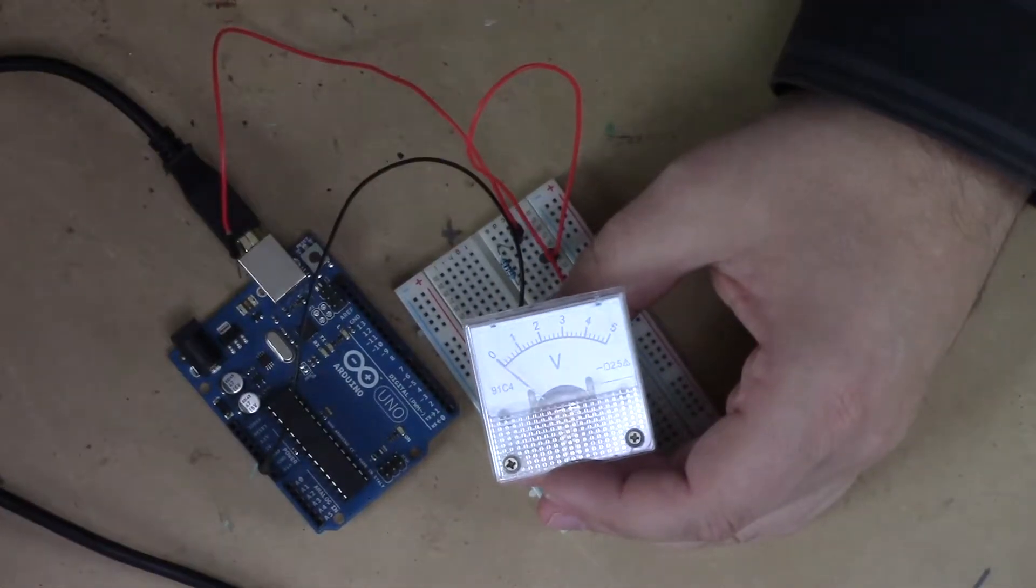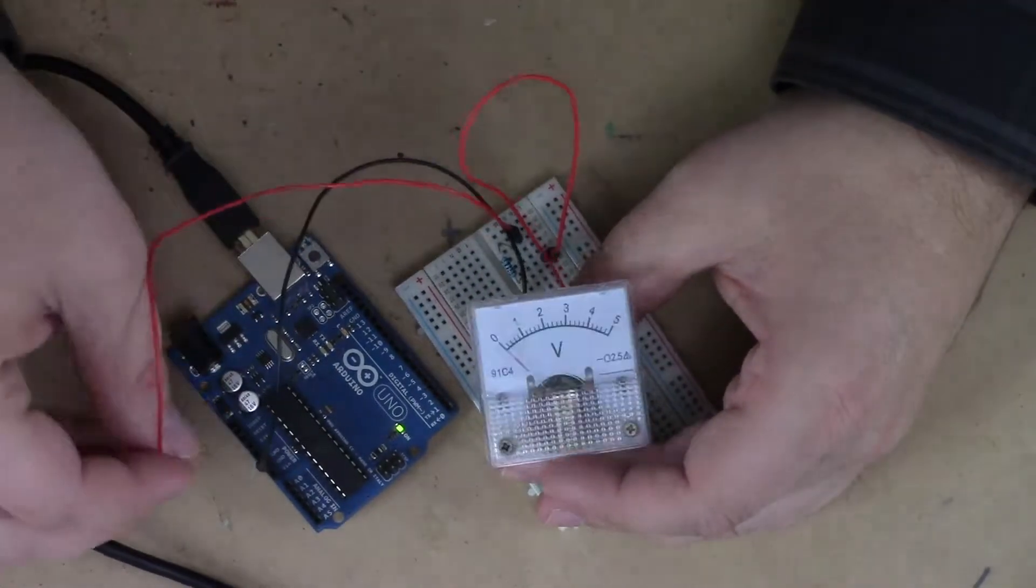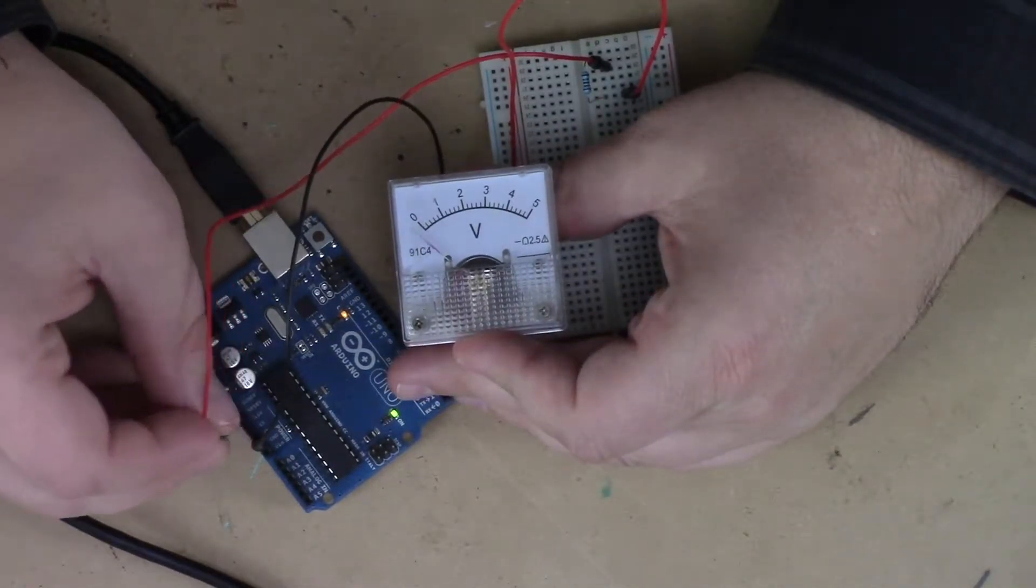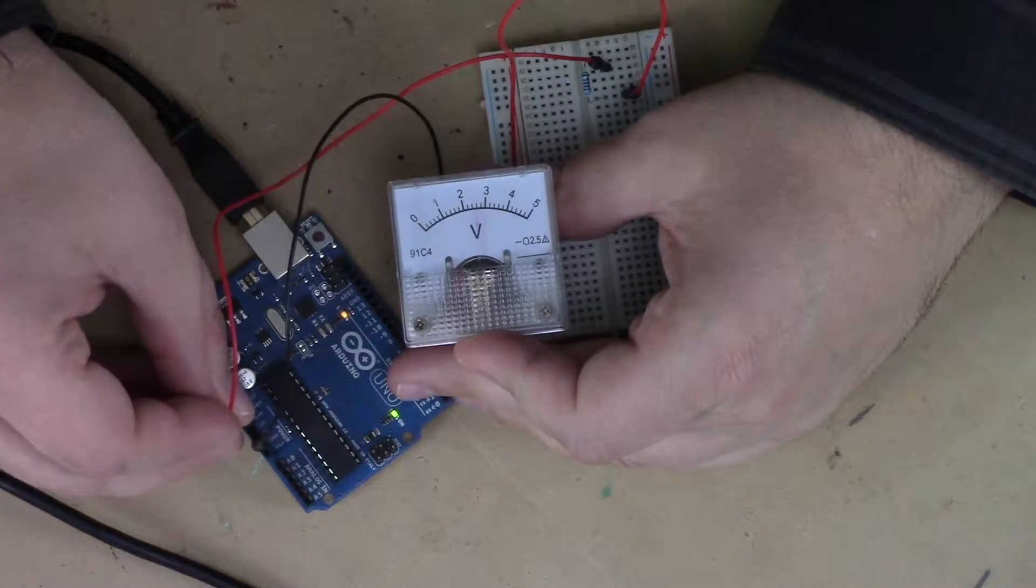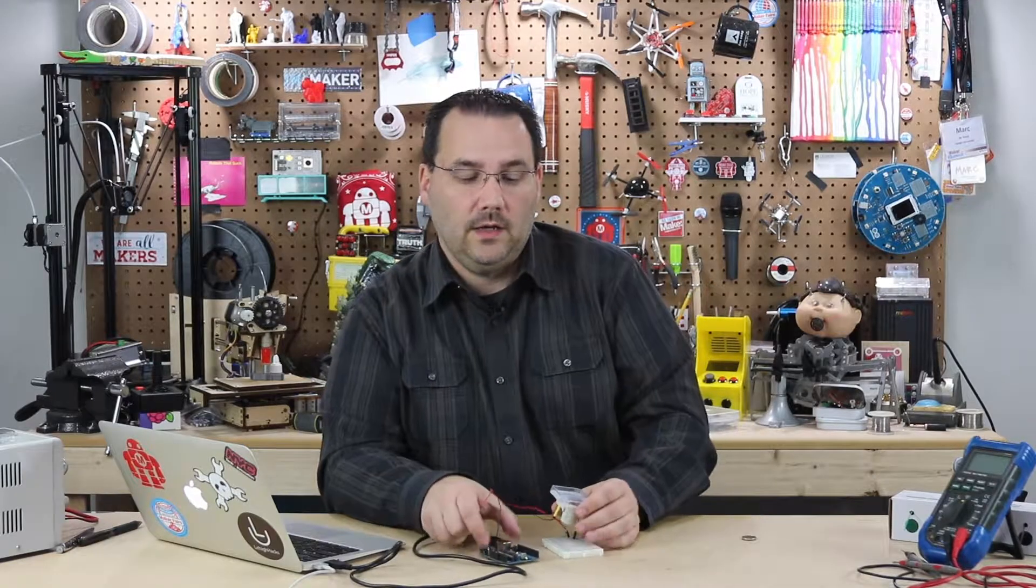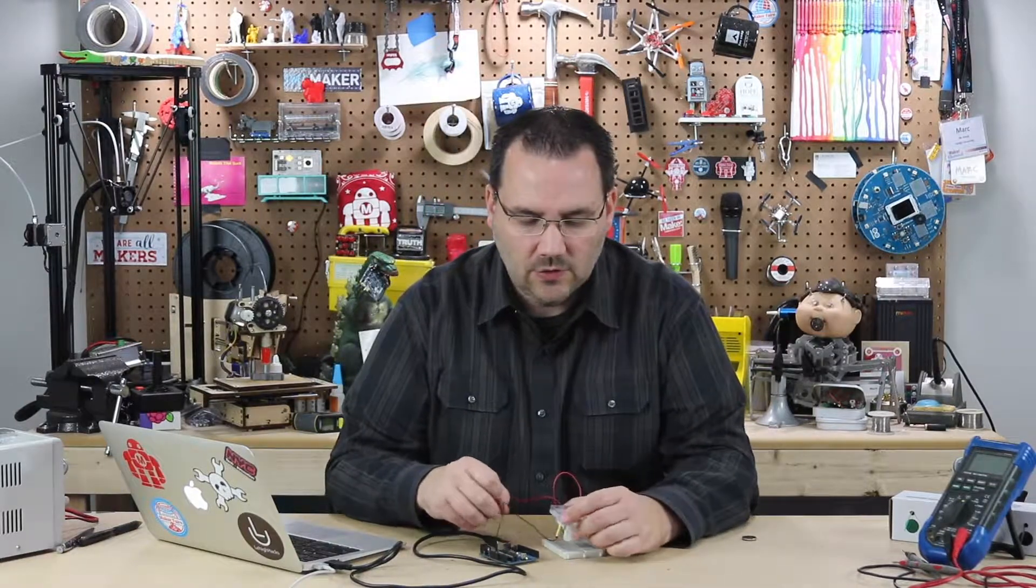So if I went and just plugged my Arduino in, I could just put this directly into five volts. There you go. Five volts, 3.3, go a little over three. Just about three. So we know it's working, and it's working quite well, but how can we control it?